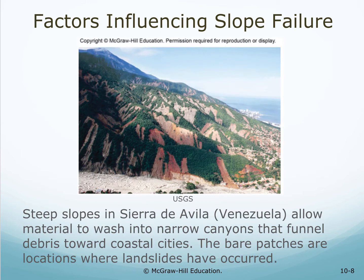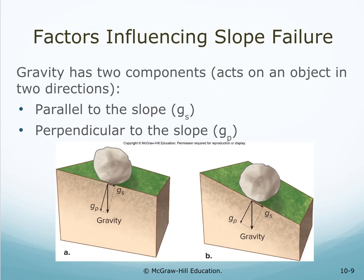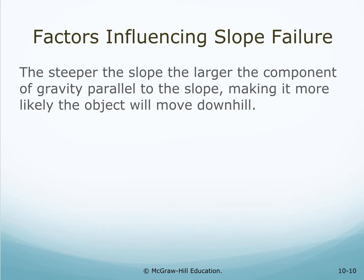Steep slopes in Venezuela allow material to wash into narrow canyons that funnel debris toward coastal cities. The bare patches are locations where landslides have occurred. There are two components of gravity that influence slope failure: parallel to the slope and perpendicular to the slope. The steeper the slope, the larger the component of gravity parallel to the slope, making it more likely the object will move downhill.